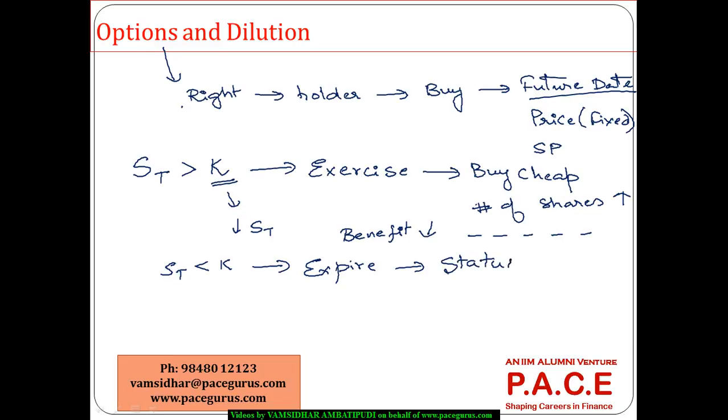But at least some probability exists that the market price would be greater than the strike price. Which means some exercise of that option is going to happen and the buying of shares is going to happen at a cheaper price. The amount of investment being brought into the company is not sufficient to compensate everyone.